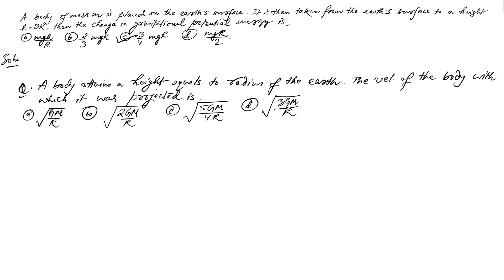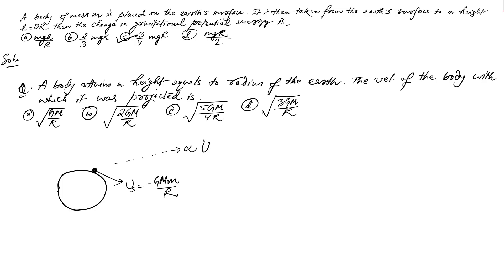To find the projection velocity, we use the change in potential energy. Recall how we derived escape velocity: on the surface of the Earth, the potential energy is minus GMm/R. We want to send the object to infinity, where the potential energy is zero. So we need to make the potential energy go from minus GMm/R to zero.